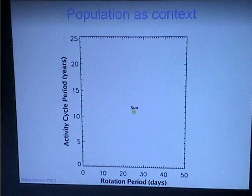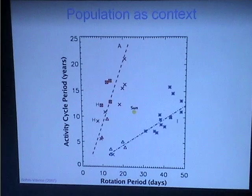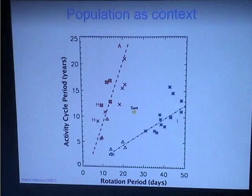The Mount Wilson survey did exactly that, starting in the 1960s, accumulating several decades of observations to identify these types of cycles in other stars. Here's the cherry-picked best subsample of their survey. Suddenly the sun looks more interesting in some ways, and less typical than most solar physicists would be comfortable with. This is a version of this data set published in a paper by Erika Böhm-Vitense a few years ago.